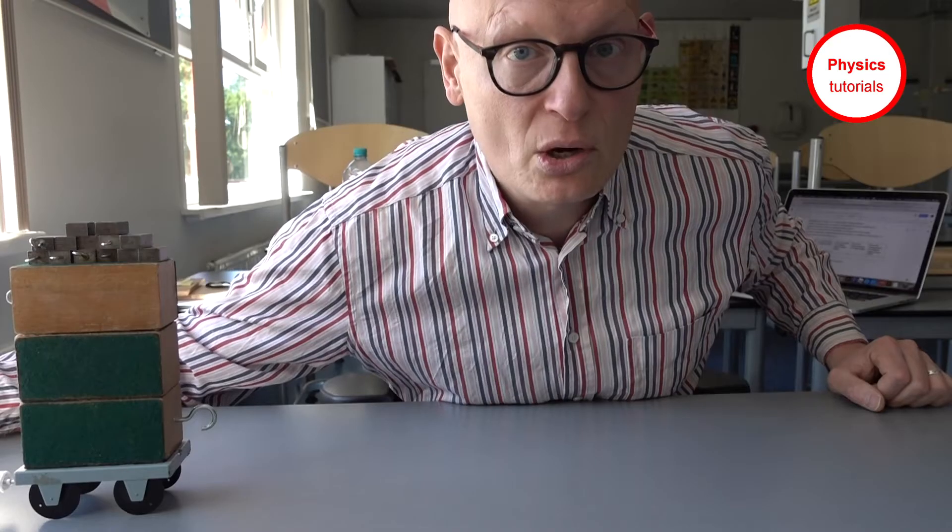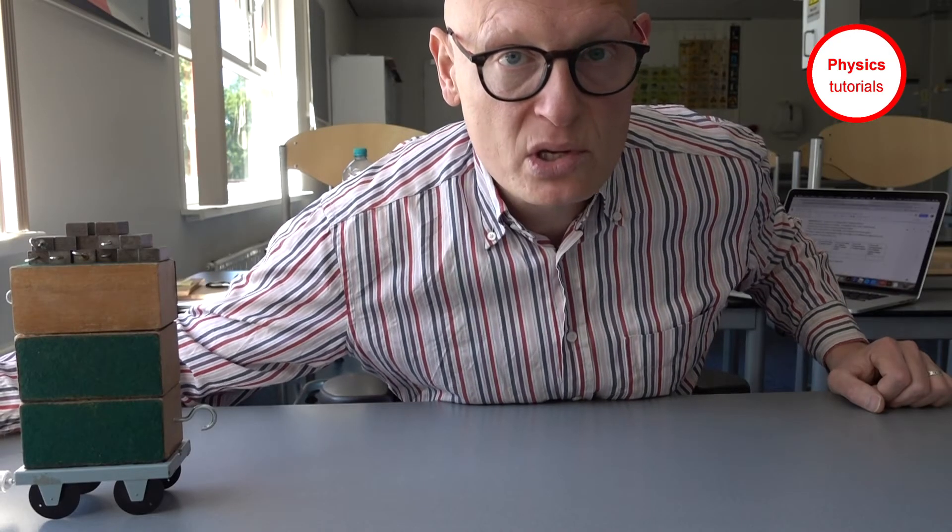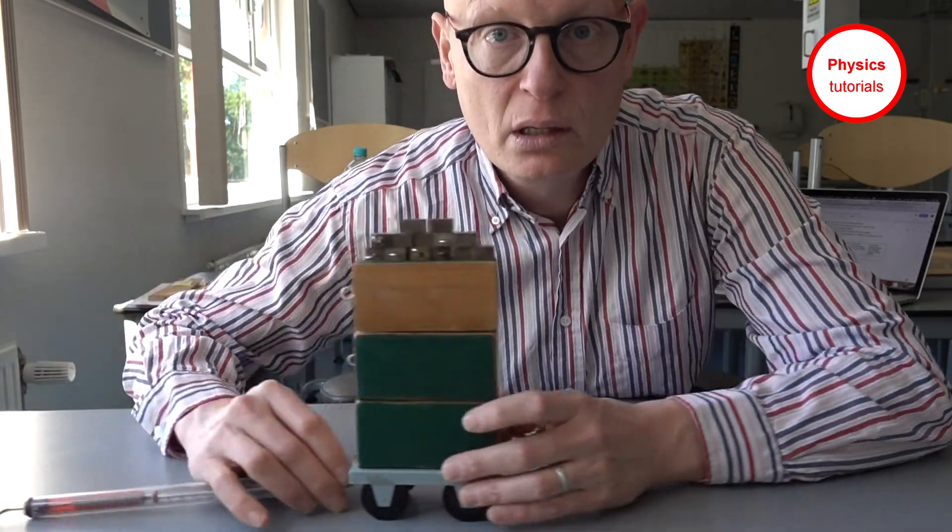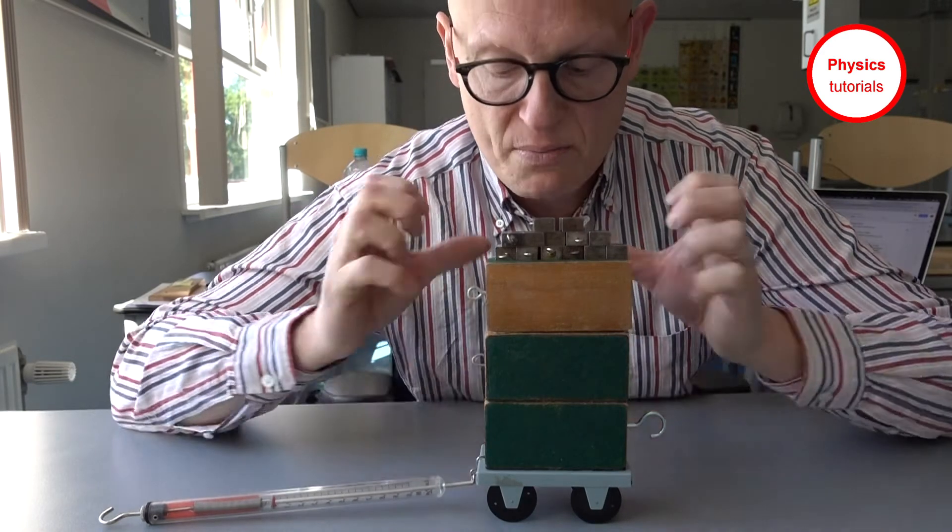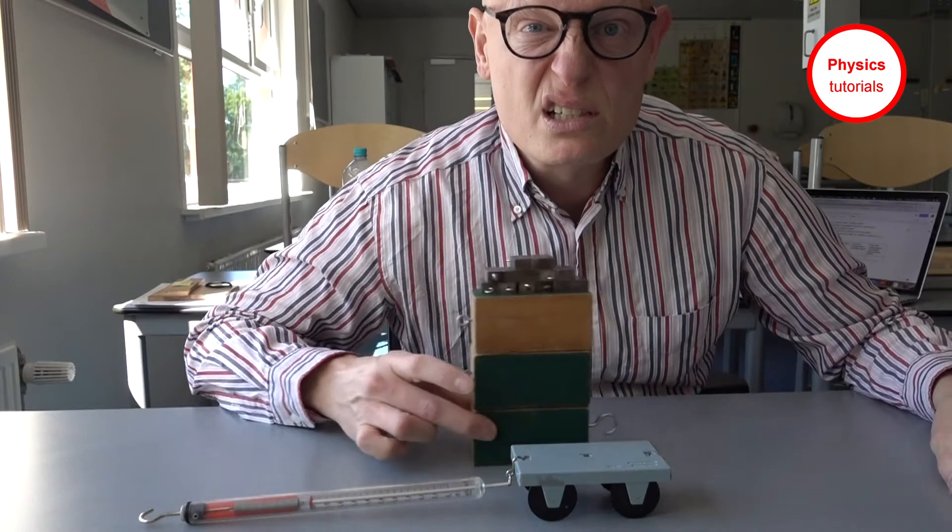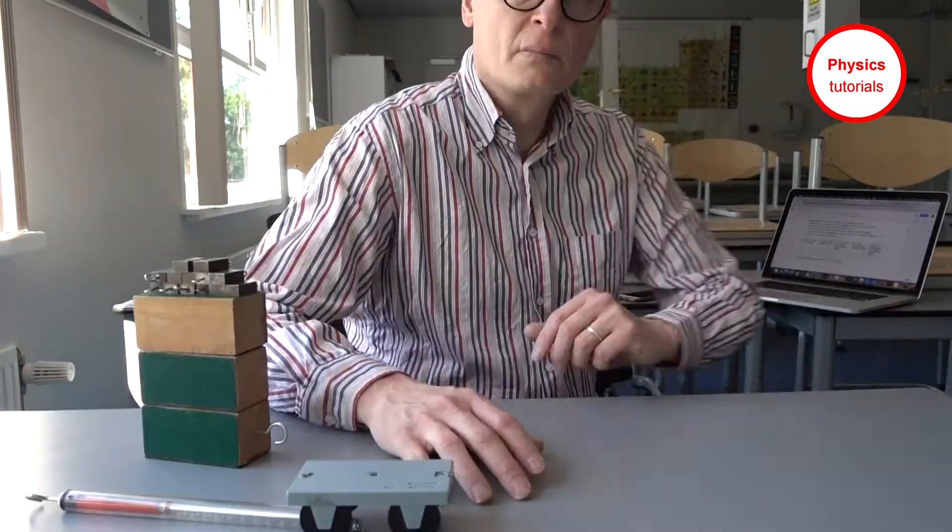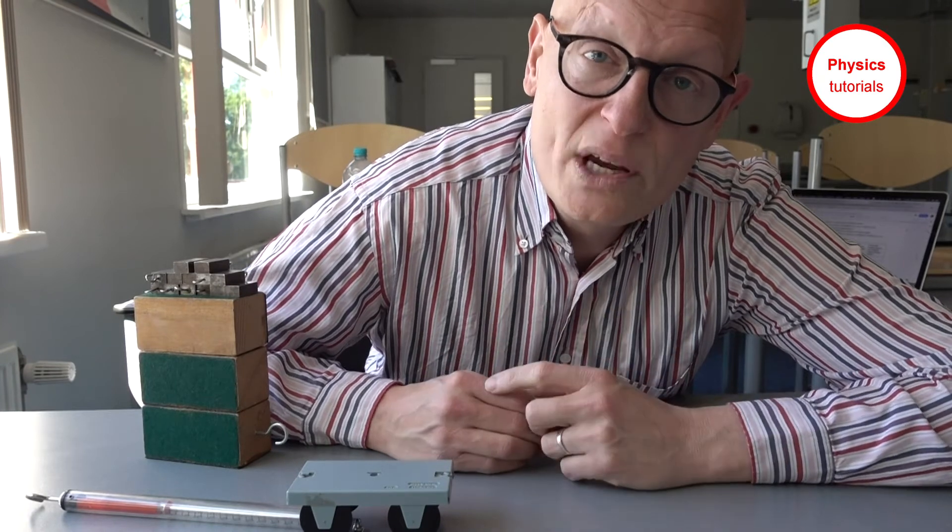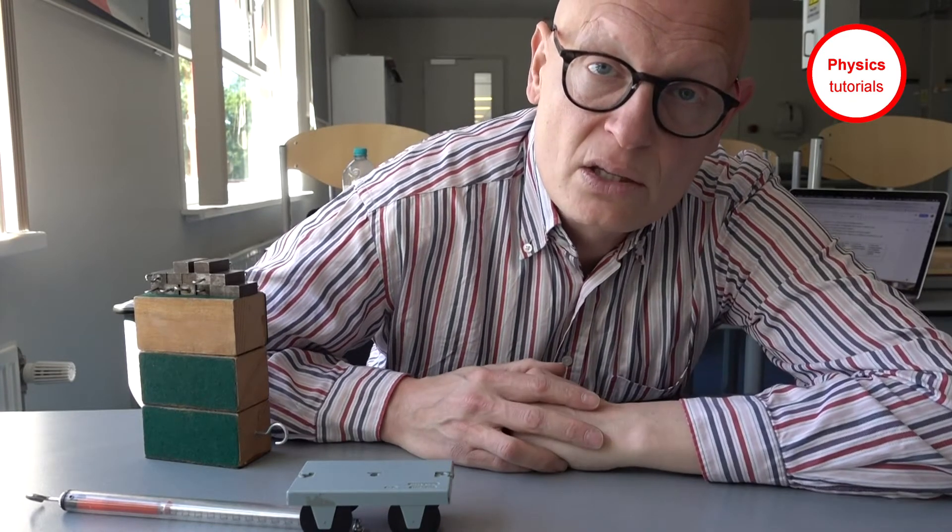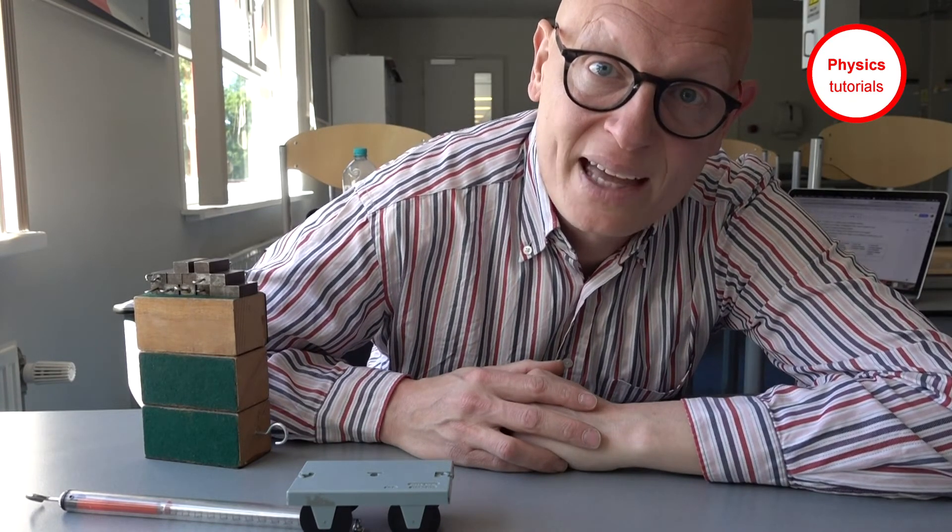So you see that the results of a trolley with wheels measuring the rolling friction is a much lower number compared to sliding friction. Now the research question is: upon which two factors does rolling friction depend?